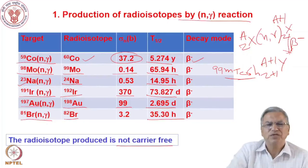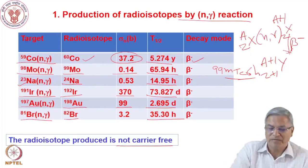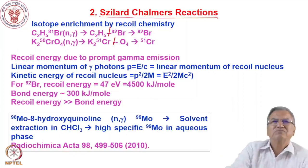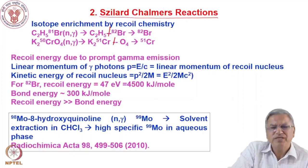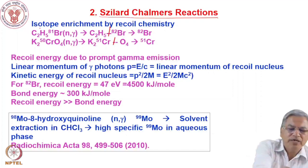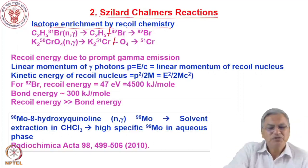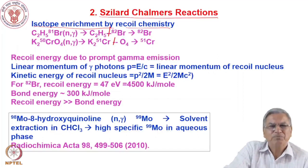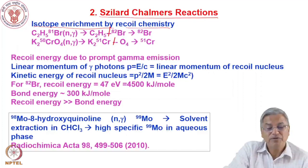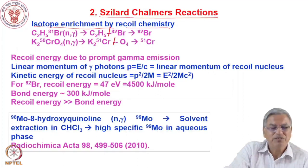Carrier-free means only the radioisotope is present — no stable isotopes of the same element. The necessity to produce carrier-free radioisotopes using N-gamma reaction led to the development of the Szilard-Chalmers reaction, also called isotope enrichment by recoil chemistry. In this approach, you take a compound such that after the N-gamma reaction, the radioisotope is detached from the compound, giving a carrier-free radioisotope or at least greatly increasing the specific activity.